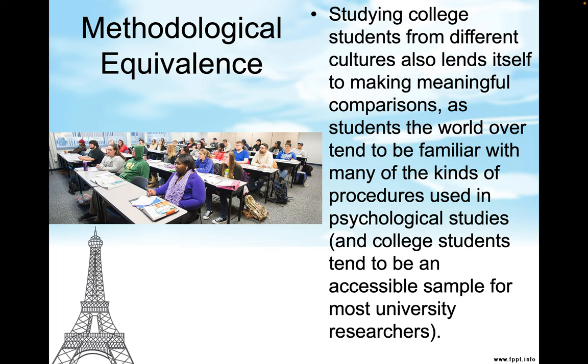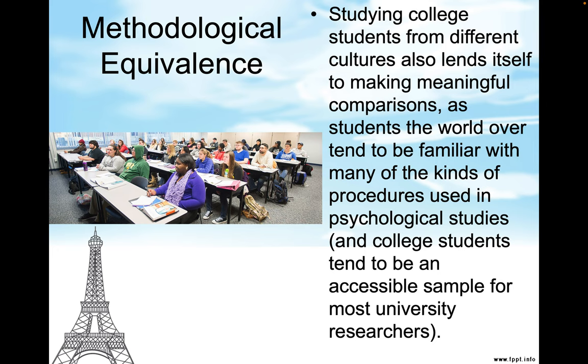You pay them by giving them a grade or giving them credit. When researchers overemphasize college students, there tends to be a significant problem with generalizability. The research can't be generalized to any populations other than other college students.